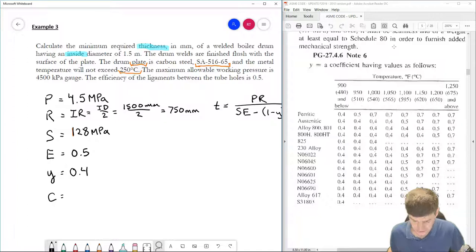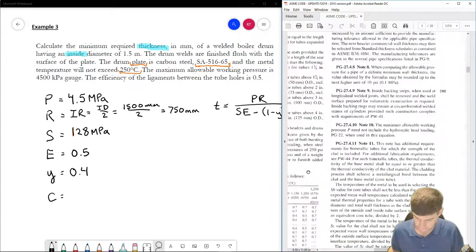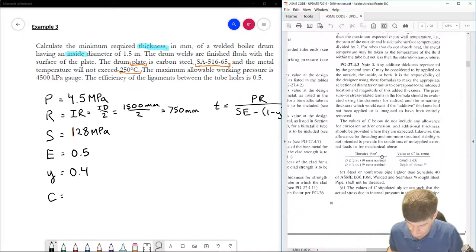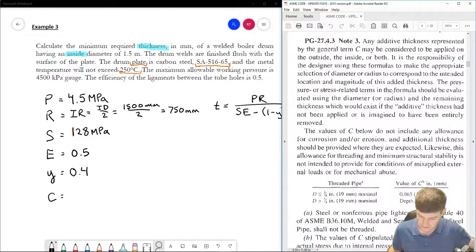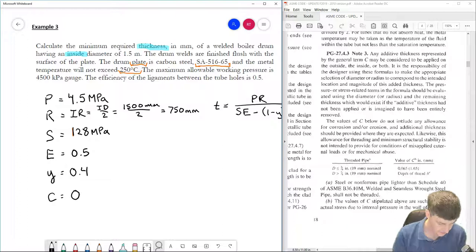Okay, last one is going to be C, and C is going to be here. Okay, so C was my note based on thickness and threads. In this case, my drum does not have any threading, and it hasn't said it needs any corrosion allowance or anything. So in this case, I don't have to add anything for C, and C becomes 0.